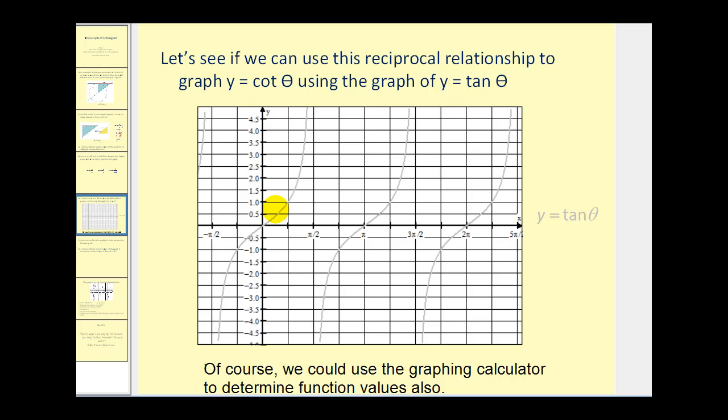We'll start by figuring out that where tangent is equal to zero, the reciprocal of zero would be undefined. So the result would be vertical asymptotes at zero, pi, and two pi. Next, we know the reciprocal of one is one, and the reciprocal of negative one is still negative one.